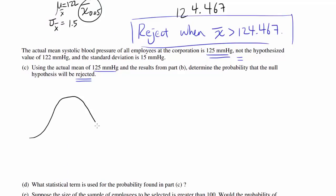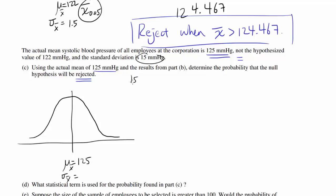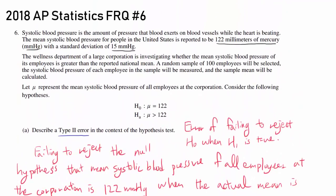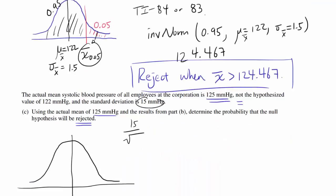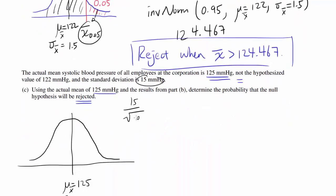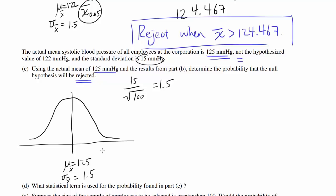Let's draw out the normal distribution. In this case, we have a mean of 125 — the actual mean — and the standard deviation is 15 divided by the square root of the sample size. The sample size is 100, so the standard deviation of sample means is 1.5. We know we reject when the sample mean is greater than 124.467, so we want to find that area to the right. You can use the normal CDF on your calculator or look it up in the table.